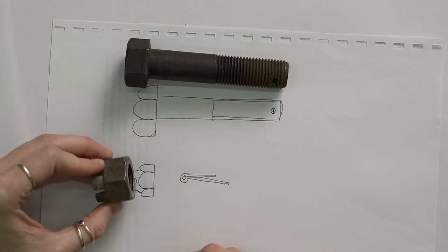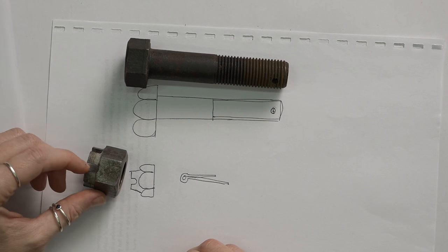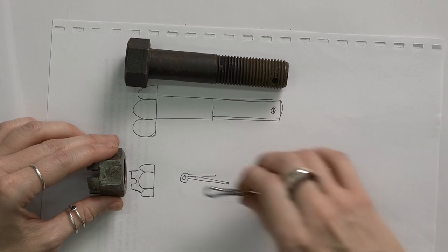The second part is the actual castle nut. You can see it has these grooves in. The third part is a split pin.